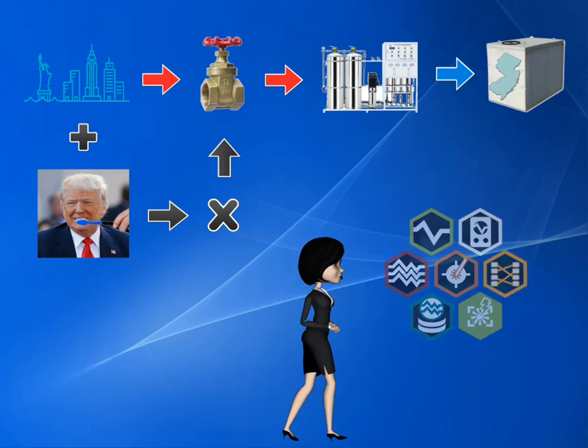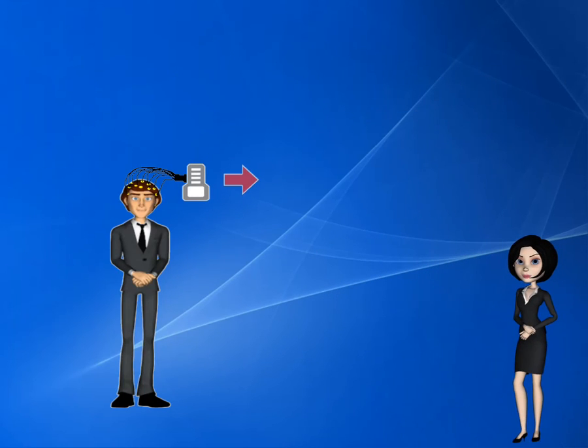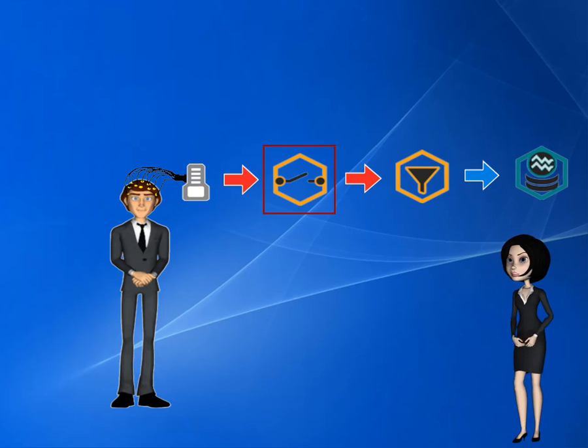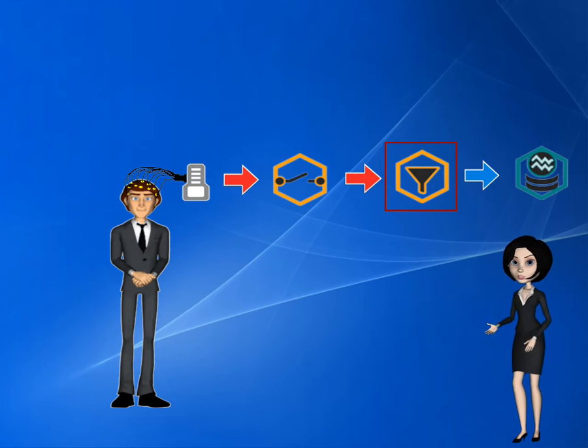Let us now consider the analogous artifact removal requirement within our Synapse example. As with our water treatment example, we have added an element that will allow us to gate the signal on and off. The Synapse artifact reject gizmo supports this function by gating our signals in such a way that the filter element that follows will not ring with spectral splatter as the signal is turned on and off.